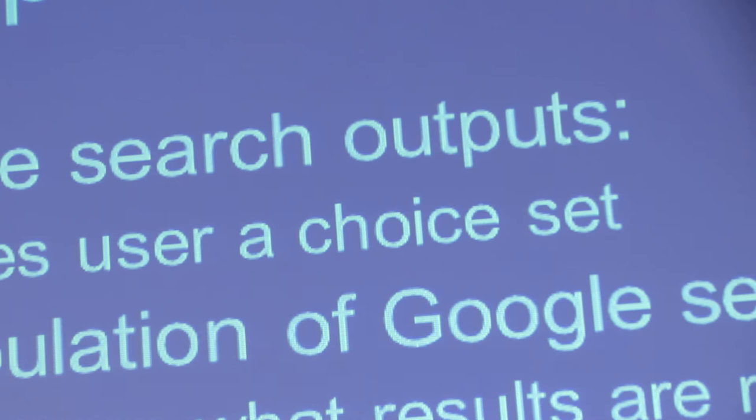We're looking at the information manipulator trying to manipulate an application in such a way that it will go on to influence the user. Google search outputs provide the user with a choice set. When I see the results of a Google search — whether it's buying or finding information — I rely on Google to give me a limited set, often just the first page, and from that I assume I've got a pretty good insight into the world, and I choose one among those.